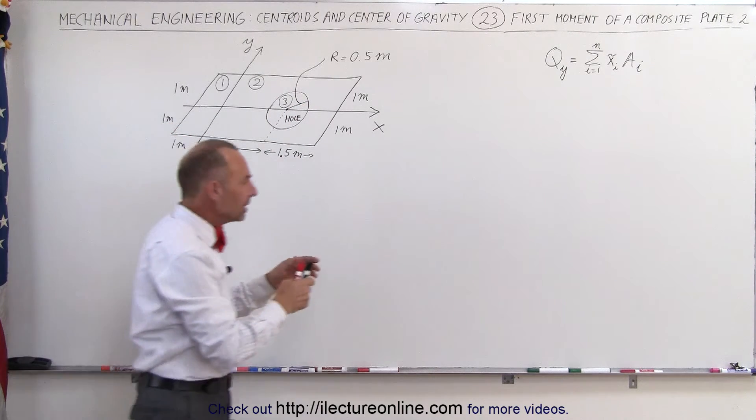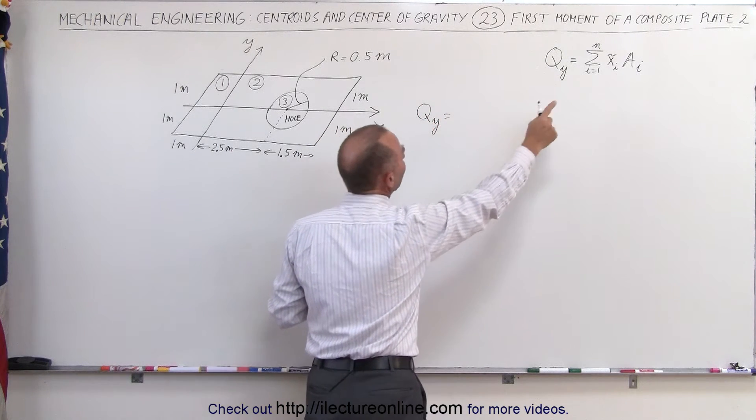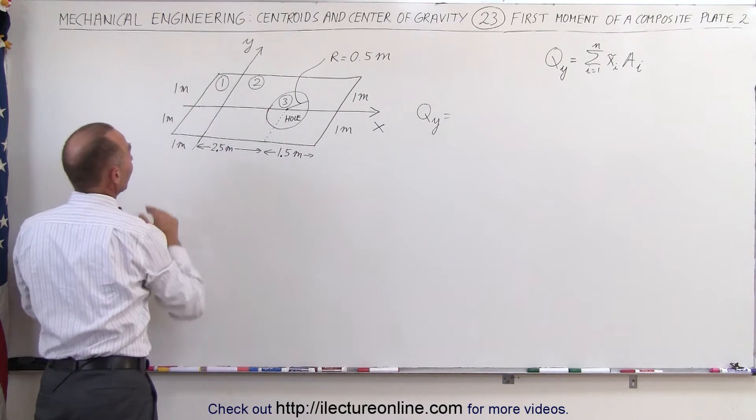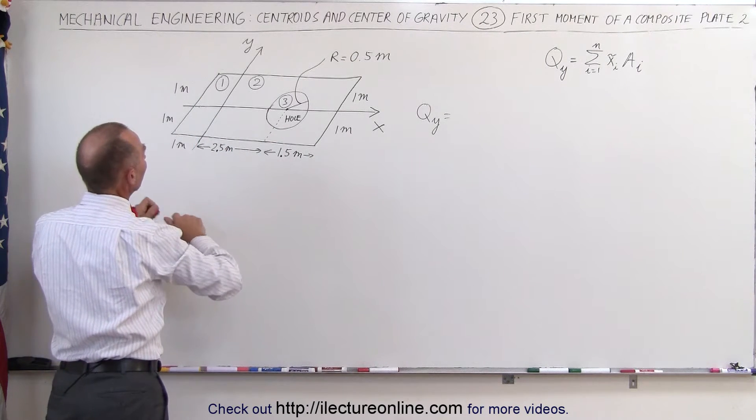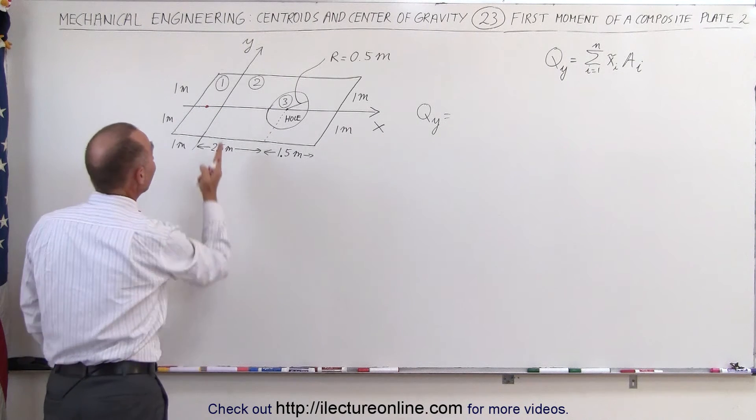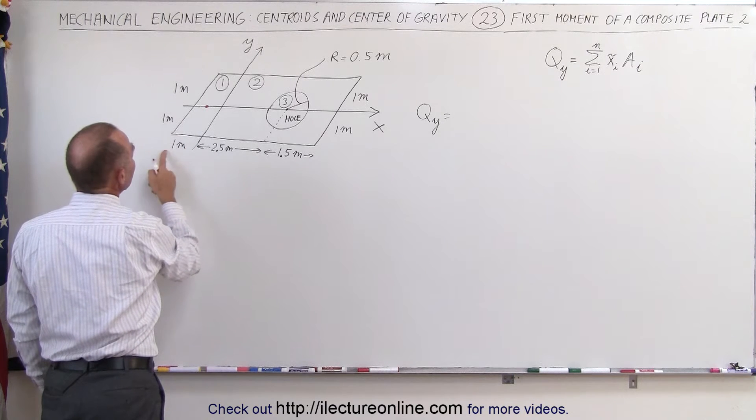Let's now plug in the equation and see how we get that. So the first moment about the y-axis is equal to the x-coordinate of the center of mass of this first piece, that first rectangle. That center mass should be exactly halfway between the origin and the left side of the rectangle. If it's one meter in distance, that would be half a meter to the left of the y-axis.